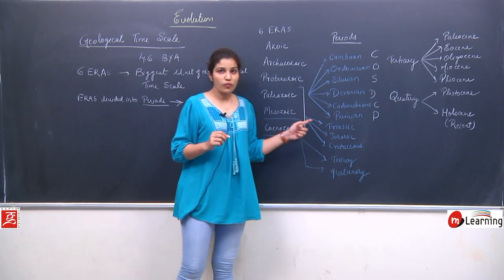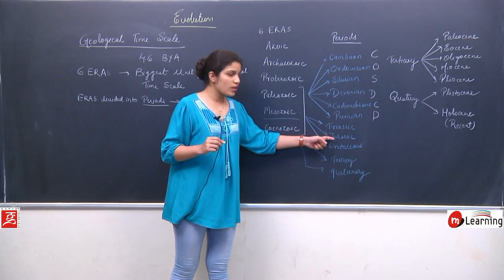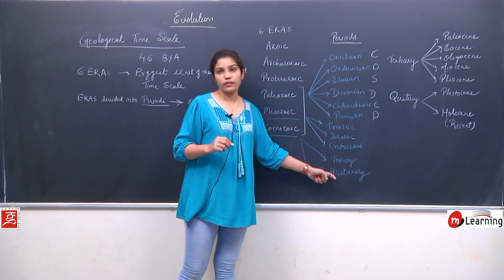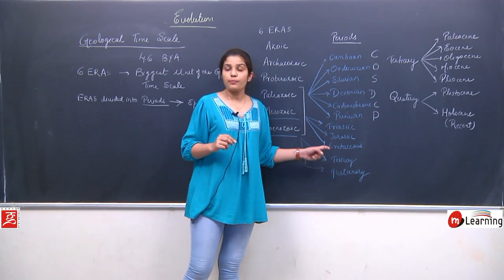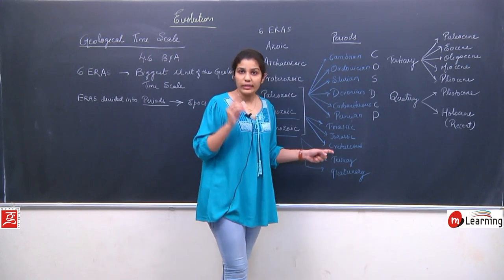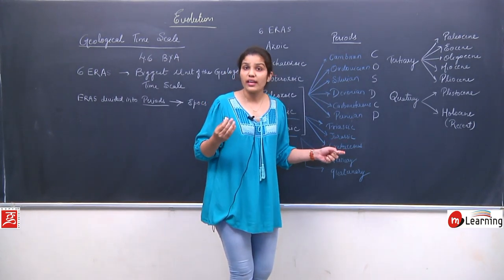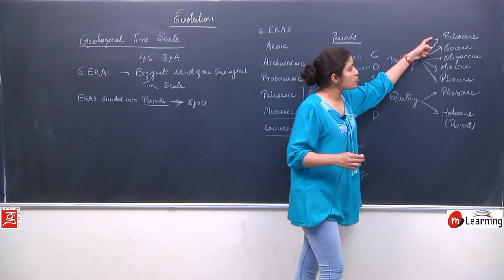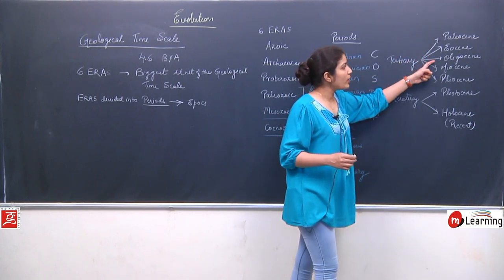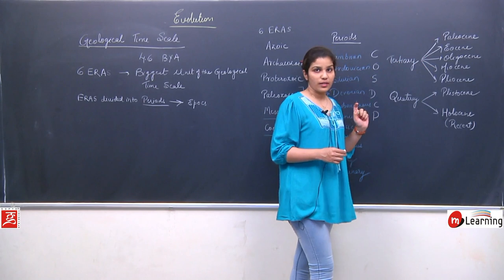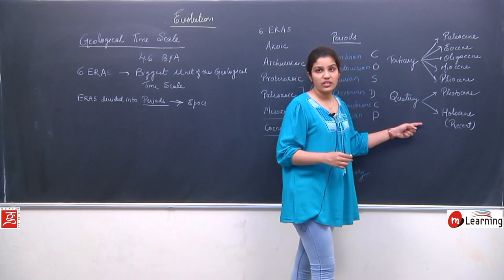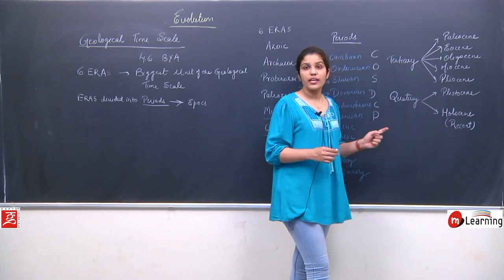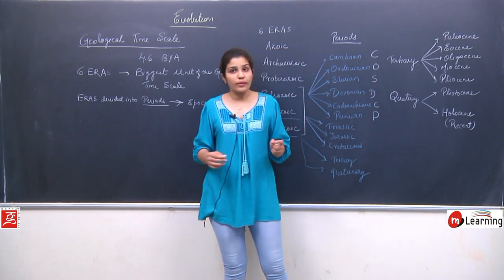The periods of the Mesozoic era are Triassic, Jurassic, and Cretaceous. The periods of the Cenozoic era are Tertiary and Quaternary. The periods of the Cenozoic era are the only ones further divided into epochs. The epochs of the Tertiary period are Paleocene, Eocene, Oligocene, Miocene, and Pliocene. The Quaternary period has Pleistocene and Holocene, and Holocene is the recent one in which human beings are the dominant organisms.